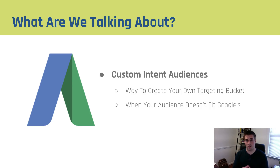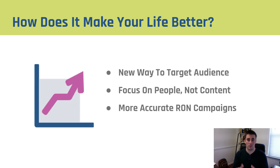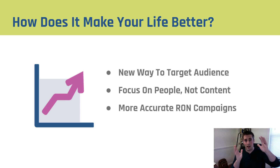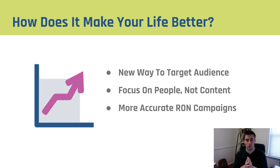The one caveat with these custom intent audiences is that right now they only work with display campaigns — they're not on YouTube yet, but I think that's going to change soon. So how does this make your life better? It's a new way to target your audiences. In the past with GDN campaigns you've had keyword, placement, topics, and traditional affinity and in-market audiences. But now this is a new fit in between topics and affinity and in-market that allows you to customize who you're going after and what it is they're looking for.